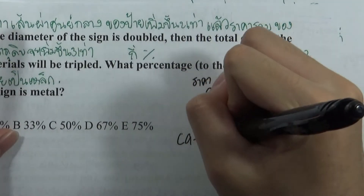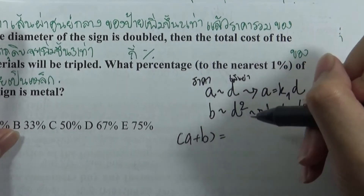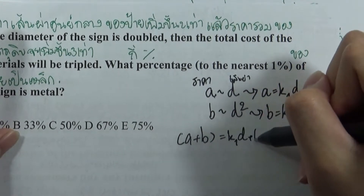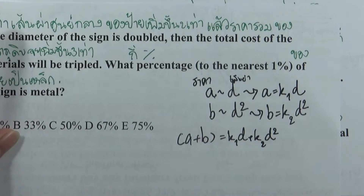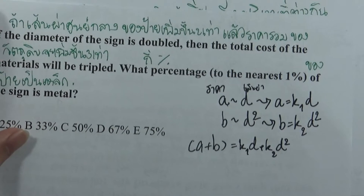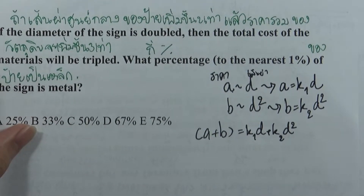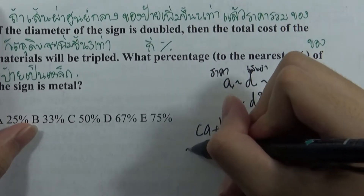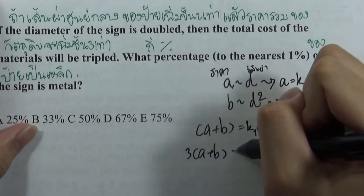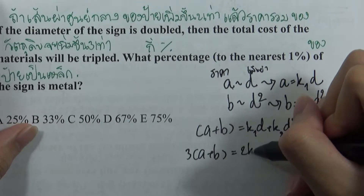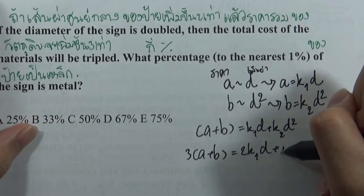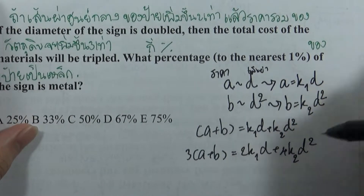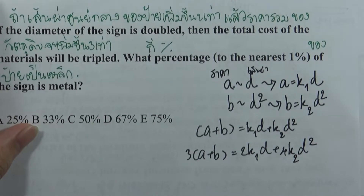เดิมราคารวมจะเป็น A + B = K1·D + K2·D². เมื่อ diameter เพิ่มเป็น 2 เท่า (if the diameter of the sign is doubled), the total cost of the material will be triple — แสดงว่า 3(A + B) = 2K1·D + 4K2·D².